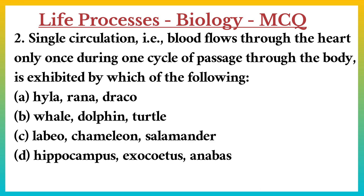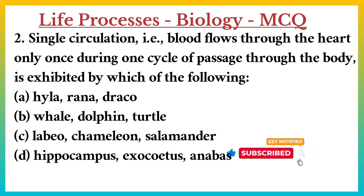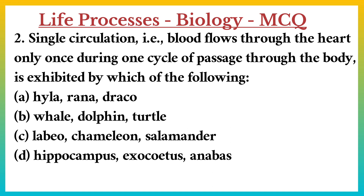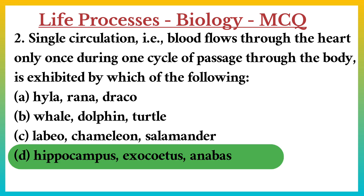Question number 2. Single circulation, i.e., blood flows through the heart only once during one cycle of passage through the body, is exhibited by which of the following? A. Hyla, Rana, Draco. B. Whale, Dolphin, Turtle. C. Labio, Chameleon, Salamander. D. Hippocampus, Exocotus, Anabas. Answer: D.